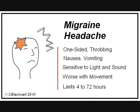The features that identify a headache as being a migraine are: the headache is one-sided, usually throbbing, and usually moderate to severe in intensity. There is nausea, possibly vomiting, and sensitivity to light and sound. Pain is made worse by physical activity. The headache lasts from 4 to 72 hours.